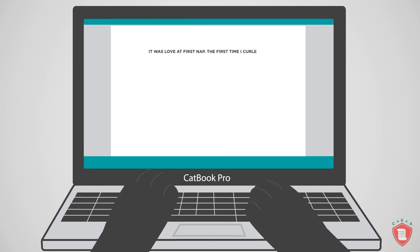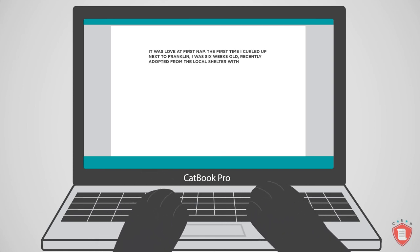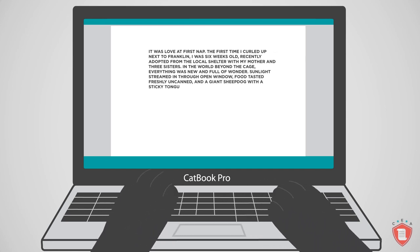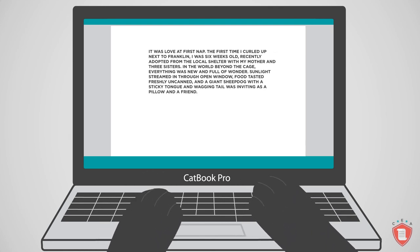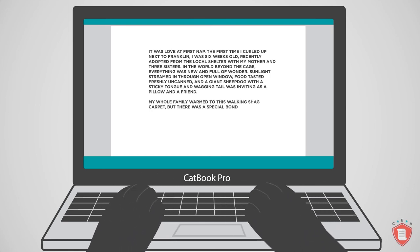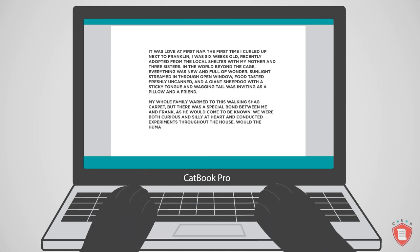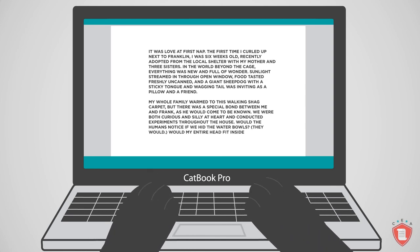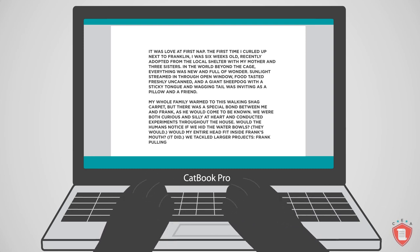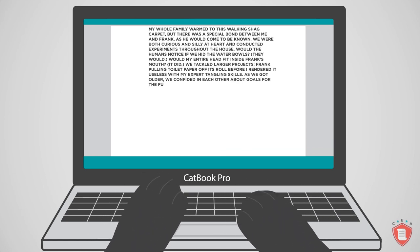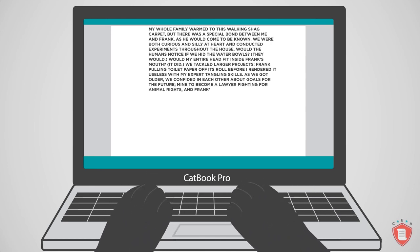It was love at first nap. The first time I curled up next to Franklin, I was six weeks old, recently adopted from a local shelter with my mother and three sisters. In the world beyond the cage, everything was new and full of wonder. Sunlight streamed in through the open window, food tasted freshly uncanned, and a giant sheepdog with a sticky tongue and wagging tail was inviting as a pillow and a friend. My whole family warmed to this walking shag carpet, but there was a special bond between me and Frank as he would come to be known. We were both curious and silly at heart and conducted experiments throughout the house. Would the humans notice if we hid the water bowls? They would. Would my entire head fit inside Frank's mouth? It did. We tackled larger projects, Frank pulling toilet paper off its roll before I rendered it useless with my expert tangling skills. As we got older, we confided in each other about goals for the future, mine to become a lawyer fighting for animal rights and Frank's to run a successful advertising firm. We encouraged each other's dreams and allayed each other's fears.